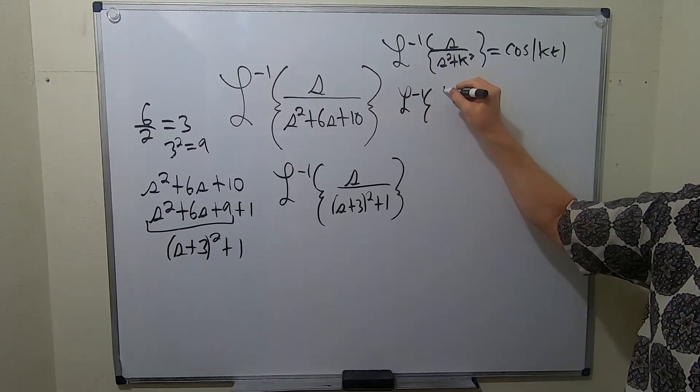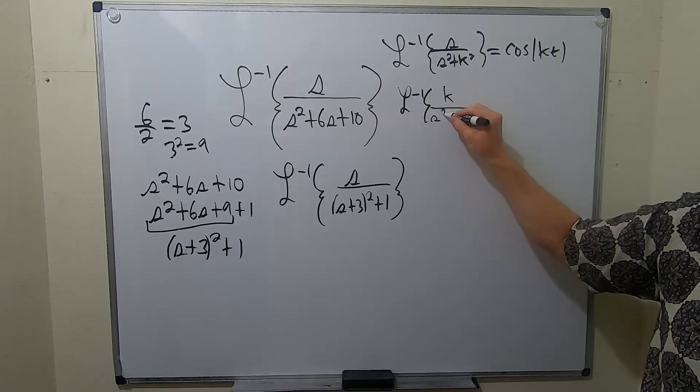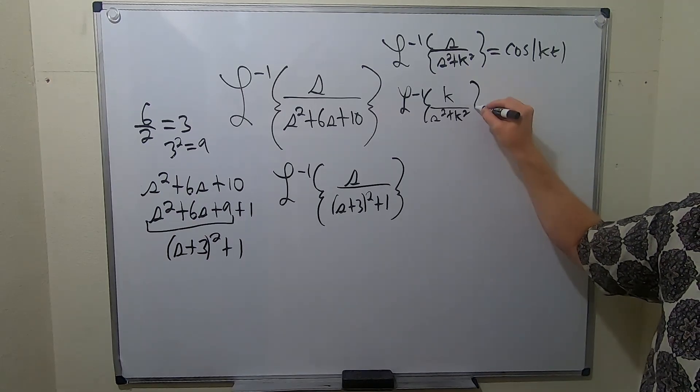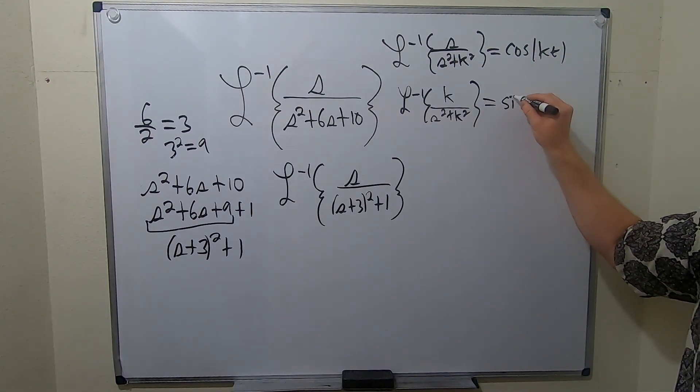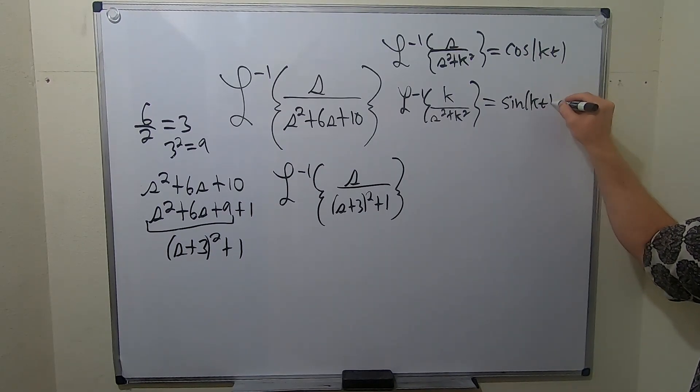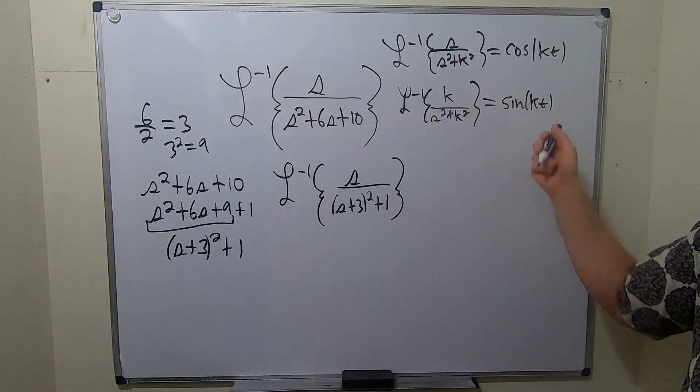And just in case I think we'll need it, the other formula we're going to need is the inverse Laplace of k over s squared plus k squared. Remember, sine has the k. So this is going to be sine kt. So remember, cosine has the s. Sine has the k.